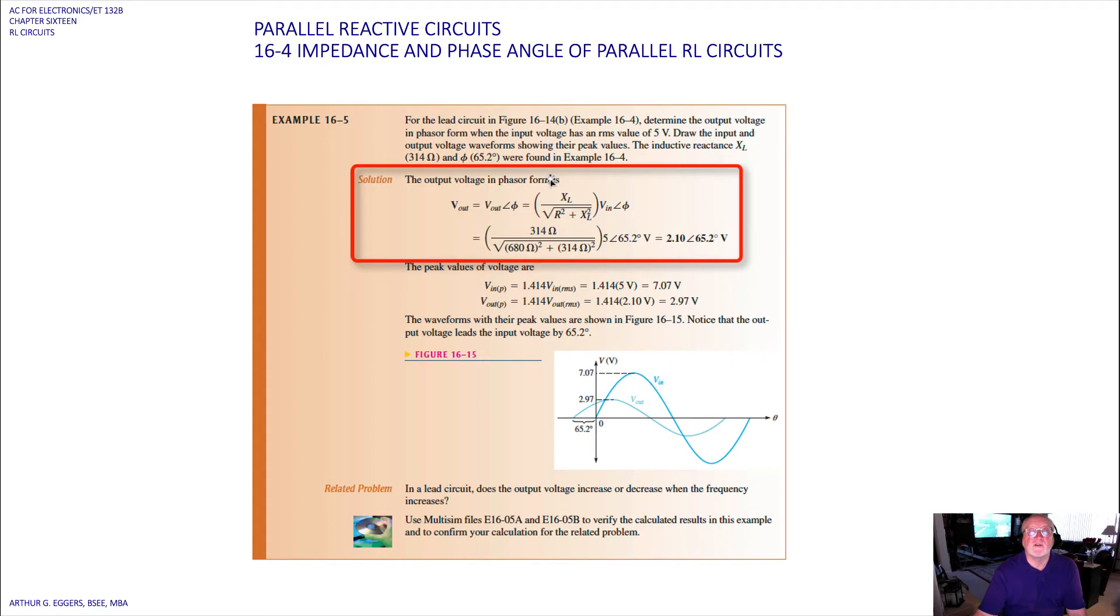We have V_out equals V_out at an angle of phi. So V_out is defined as X sub L over the sum of the two vector terms: R squared plus X sub L squared summed and take the square root, at an angle of phi. So when we put our values in, 314 over the square root of 680 squared plus 314 squared, multiply it times the voltage 5 volts in at an angle of 65.2 degrees, we end up with 2.10 at an angle of 65.2 degrees.